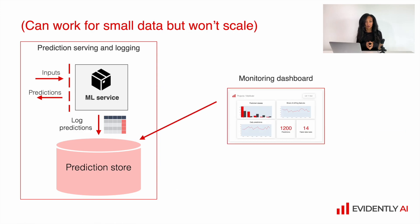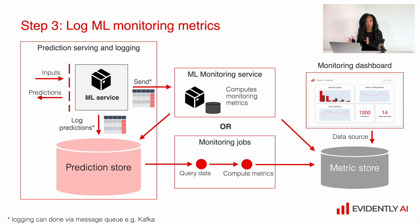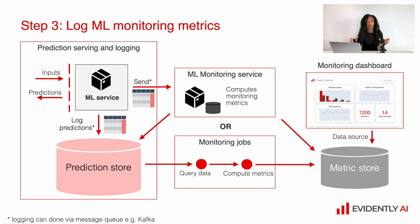One might ask: why do we need two different stores — a prediction store and a metric store? The answer is that we have different requirements for predictions and metrics. For the prediction store, we need to store logs securely for a long period of time, using storage that provides backups. For the monitoring dashboard, we want storage that allows us to quickly query data and reload it — so we need a different, faster type of storage. This is why the two-store architecture is preferable.